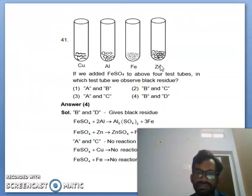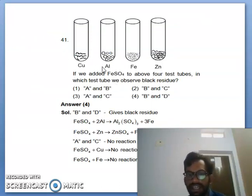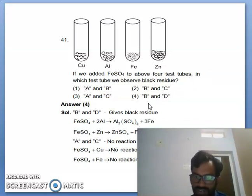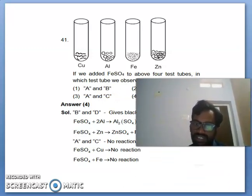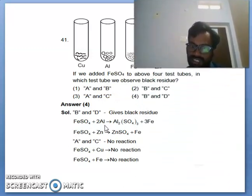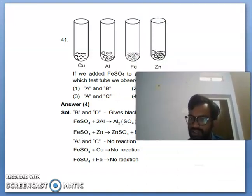Next one you can see here the previous repeated bits: if we can see the added into copper, aluminum, ferrous iron and zinc, and you can add the ferrous sulfate in the four test tubes, then test tube will be observed in the black residue. The answer is 4, B and D. So you can see here clearly I mentioned here: ferrous sulfate plus aluminum, if you add water, no reaction. Here is what happens: reactions.